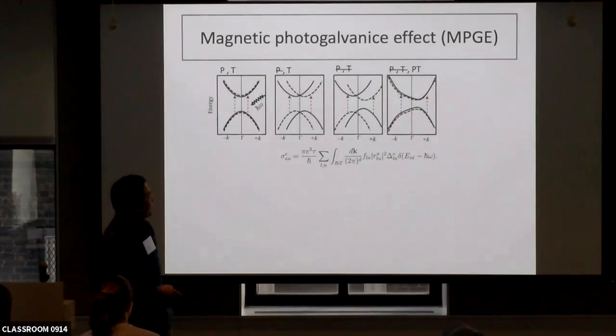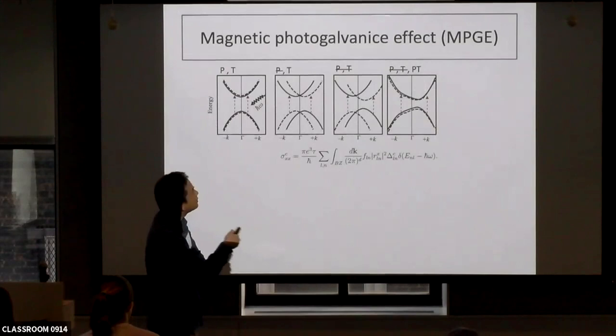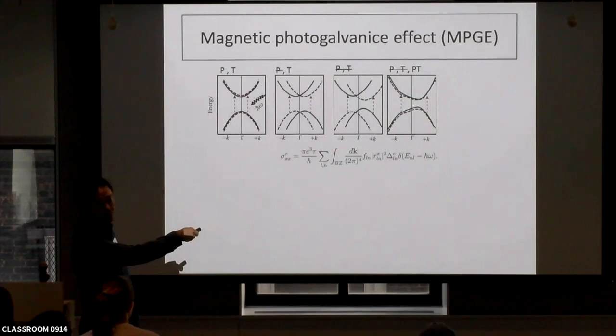If we break both P and T, the band structure left and right is no longer symmetric, and we can get a net velocity contribution. Even in the extreme case where we break P and T but still keep PT symmetry, all bands are still doubly degenerate but clearly not symmetric anymore. In these two cases we can get a non-zero net velocity, corresponding to a DC current. This DC current should be proportional to the dipole transition between the valence and conduction band, proportional to the relaxation time tau, and also proportional to the velocity difference at the K/-K point pairs. Spin-orbit coupling is exactly what determines how left and right are different.